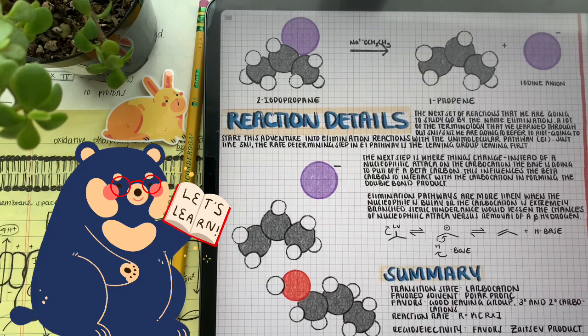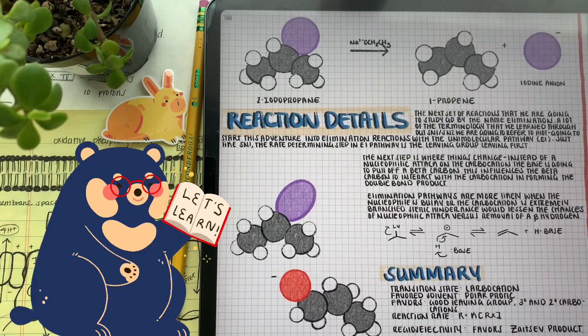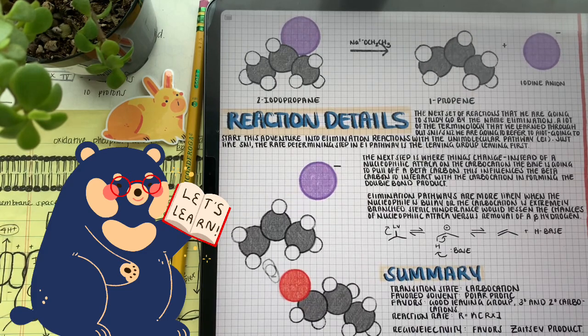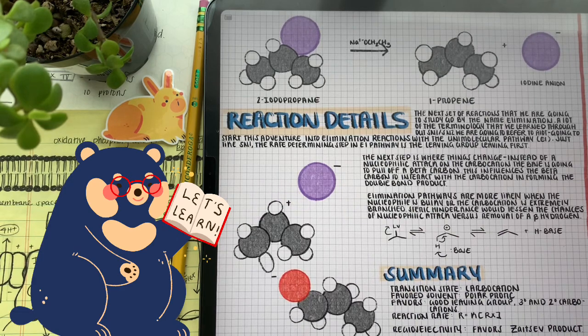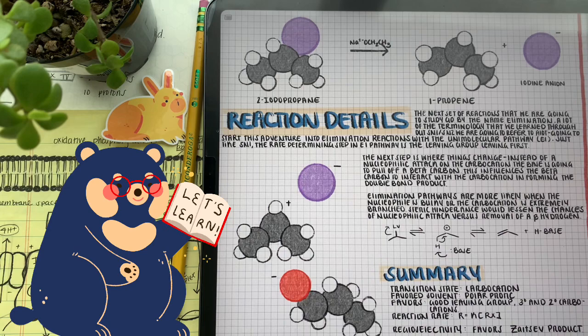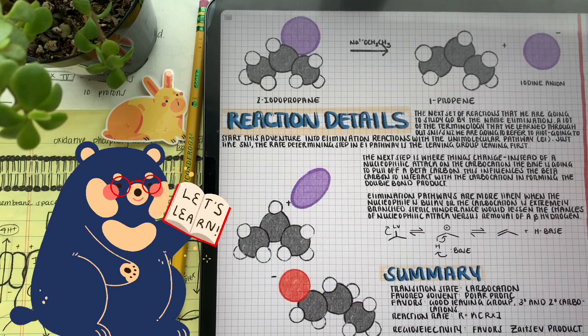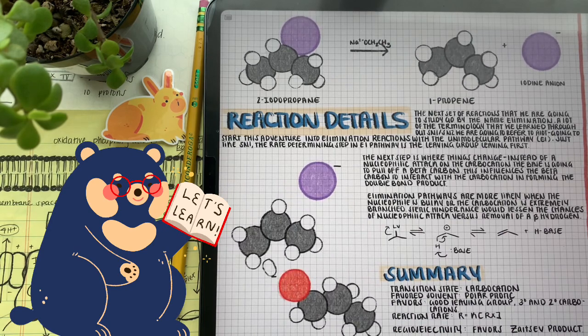For example, the reaction you're seeing here is an E1 pathway. A lot like how the SN1 pathway was two steps with the formation of a carbocation, E1 pathways are very similar. The leaving group leaves and we form a carbocation.